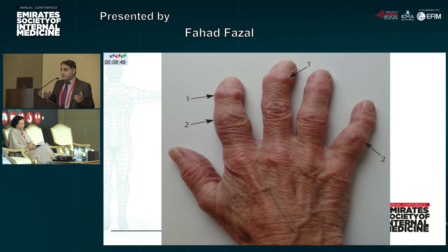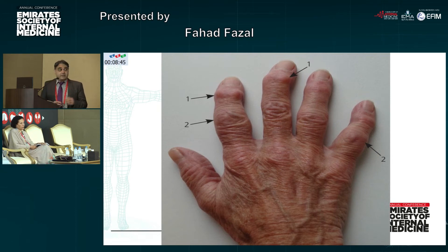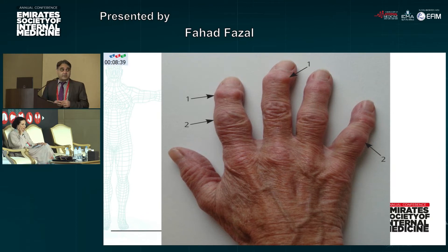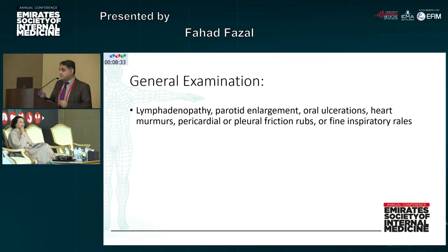This picture shows a bony swelling — this is osteoarthritis. These are the Heberden and Bouchard nodes, which represent osteoarthritis, especially in old age.